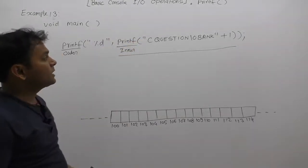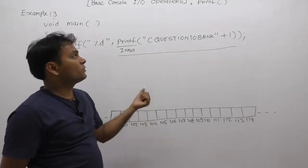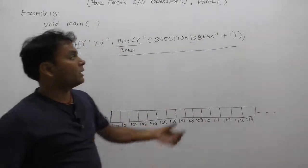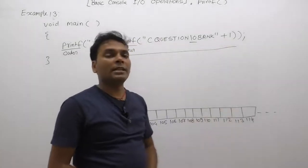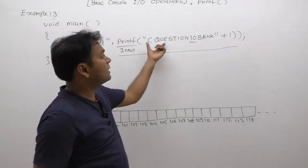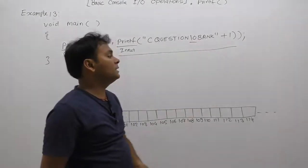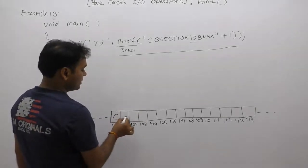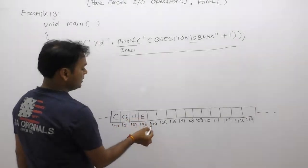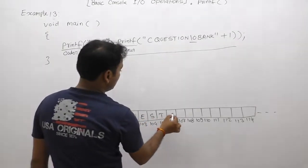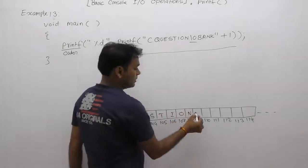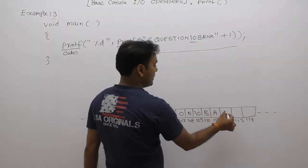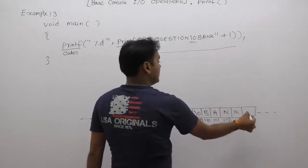Inside the inner printf, we are supplying the string "C QUESTION", but we are supplying a manual null character before "BANK". Also, we are applying some addition operations. What is the final size of this string? It will take 15 bytes in memory. Therefore, we are creating an array of 15 bytes. Here we are storing: C-Q-U-E-S-T-I-O-N, then null, then B-A-N-K, and again an implicit null.